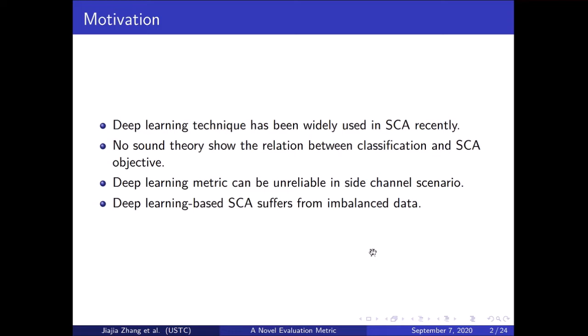Recent works show deep learning based side-channel analysis suffers from imbalanced data. In this work, we want to explore the relations between deep learning and side-channel analysis and try to give a better evaluation metric for deep learning based side-channel analysis. In this process, we also propose a good loss function which solves the problems of imbalanced data.